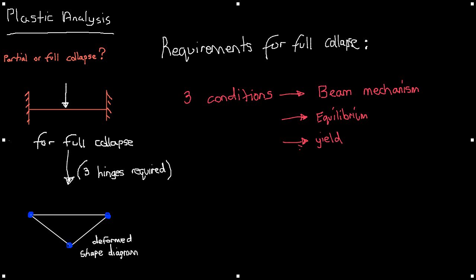The mechanism condition is where sufficient hinges must form to develop a mechanism by which it fails. The equilibrium condition is in which the bending moments for any collapse mechanism must be in equilibrium with the applied collapse load. Now normally this is always satisfied in a problem. We don't need to concern ourselves with this one too much but nonetheless we need to be aware of it.